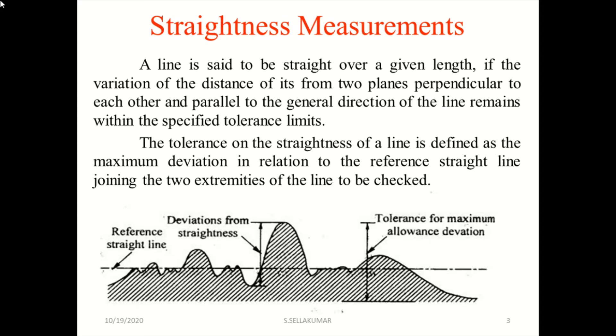The tolerance on the straightness of a line is defined as the maximum deviation in relation to the reference straight line joining the two extremities of the line to be checked.